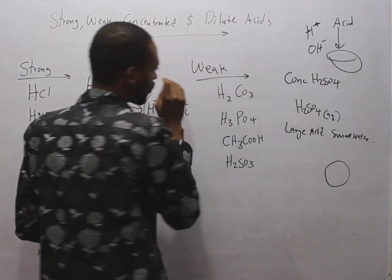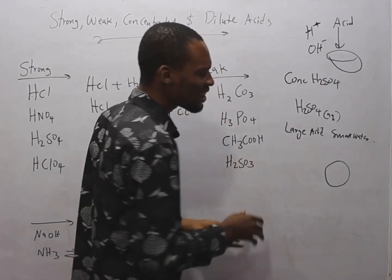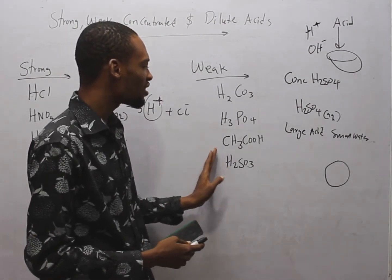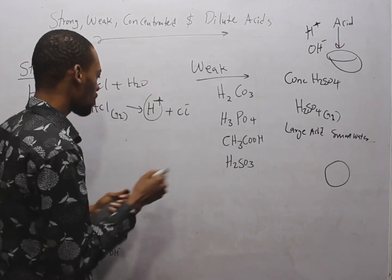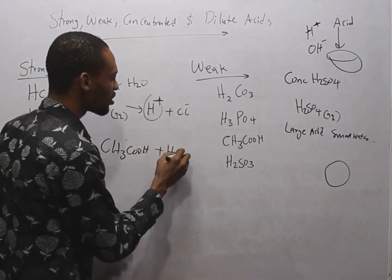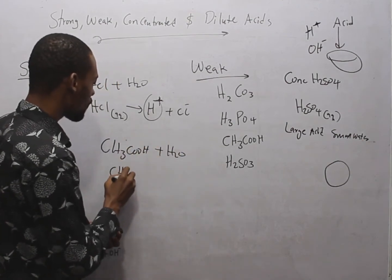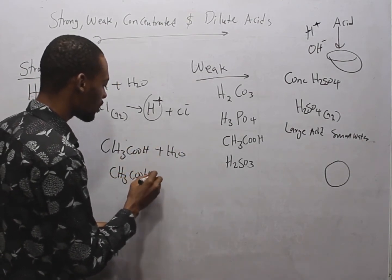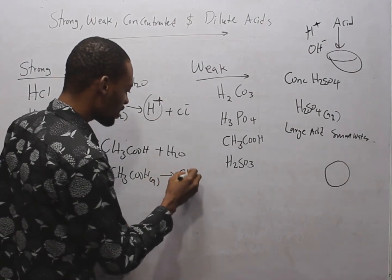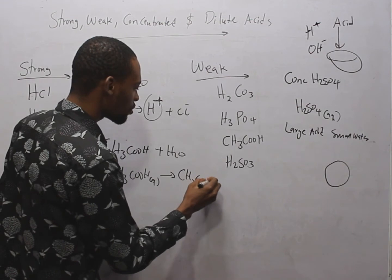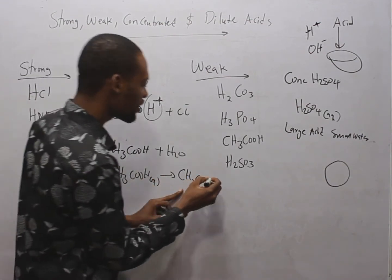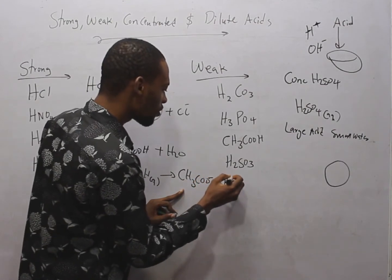Meanwhile, weak acids, they don't ionize completely in solution. Some remains. For example, if you have CH3COOH plus water, or let's say CH3COOH (aq), this will give you CH3COO-. So once this is dissolved in water, it gives you CH3COO- plus H+.